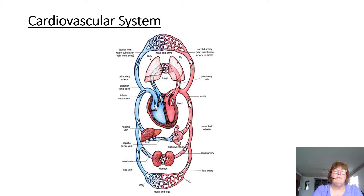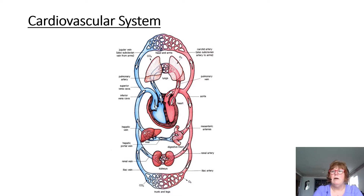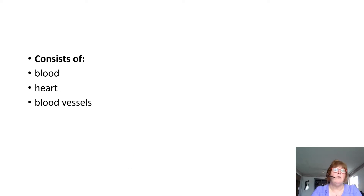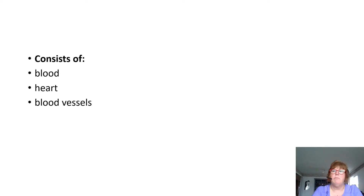So the cardiovascular system — it looks like a very complex system, so I will try to make it as easy as possible. Once you've read your section in your textbook, I strongly suggest that you continue on with the notes and video. The cardiovascular system consists of the blood, the heart, and the blood vessels.